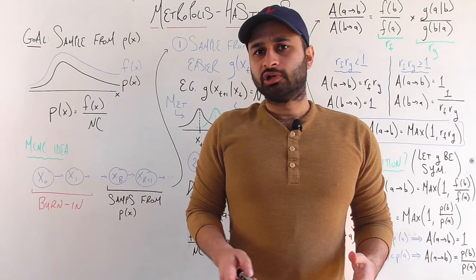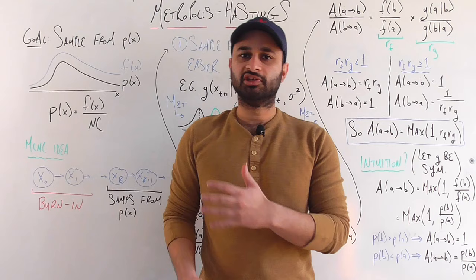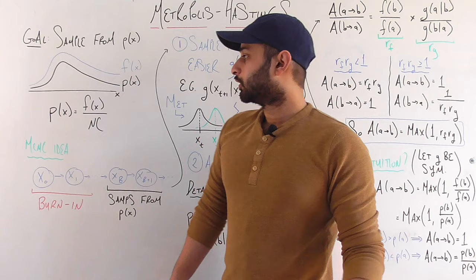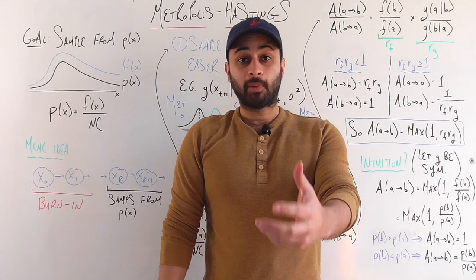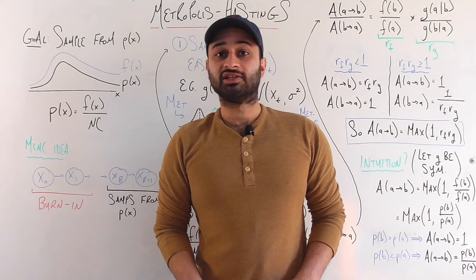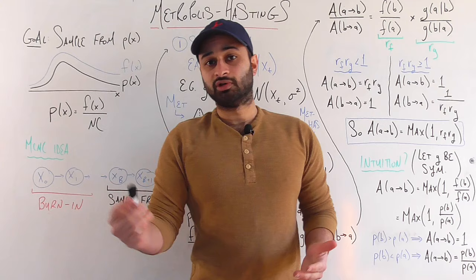Our goal in all of this is always to sample from some distribution p of x. As we've been assuming in these sampling videos, we don't know the exact form of p of x. We only know the numerator, f of x — this blue line up here. In explicit mathematical terms, p of x equals f of x divided by some normalizing constant that is difficult to compute. The question is: can we use only f of x to get samples from p of x?